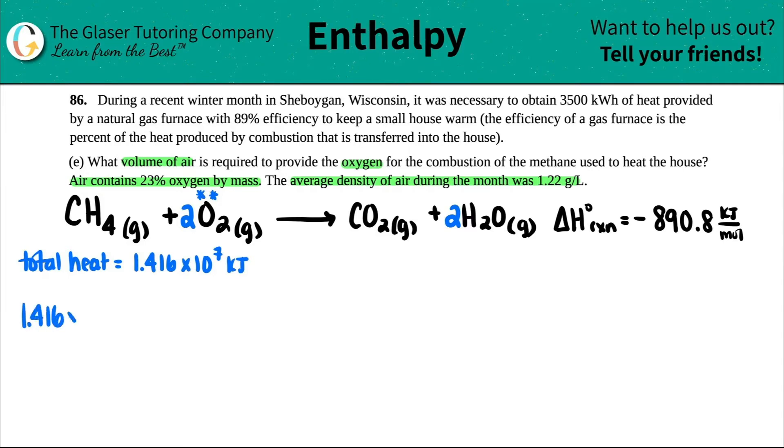1.416 times 10 to the seventh kilojoules. Now, if we're converting, it's always multiplied by a ratio. You throw the unit that you don't want on the bottom. And now what unit are we going to use up here? Look for a ratio that has kilojoules in it. This is the only thing that I got - the negative 890.8 kilojoules per mole. So I can use this information. This is the delta H of this whole reaction.